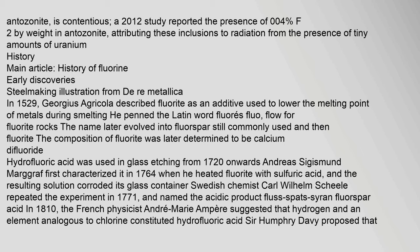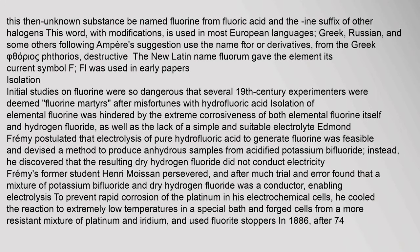In 1529, Georgius Agricola described fluorite as an additive used to lower the melting point of metals during smelting. He penned the Latin word fluorase (from fluo, meaning 'flow') for fluorite rocks. The name later evolved into fluorspar and then fluorite. The composition of fluorite was later determined to be calcium difluoride. Hydrofluoric acid was used in glass etching from 1720 onwards. In 1810, French physicist André-Marie Ampère suggested that hydrogen and an element analogous to chlorine constituted hydrofluoric acid. Sir Humphrey Davy proposed that this unknown substance be named fluorine, from fluoric acid and the -ine suffix of other halogens.